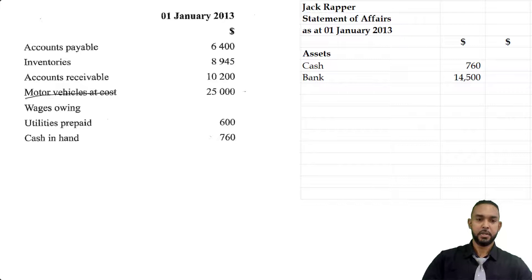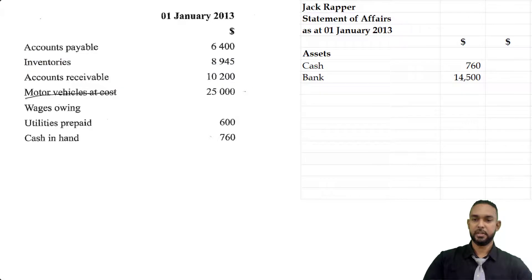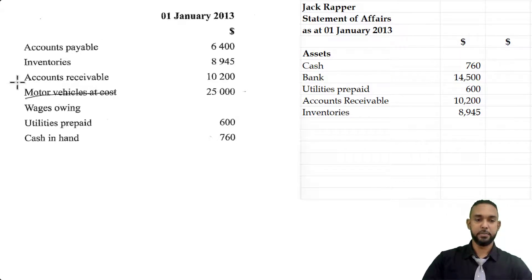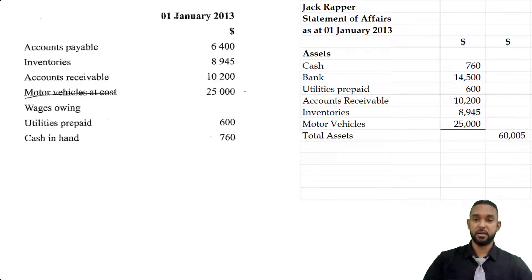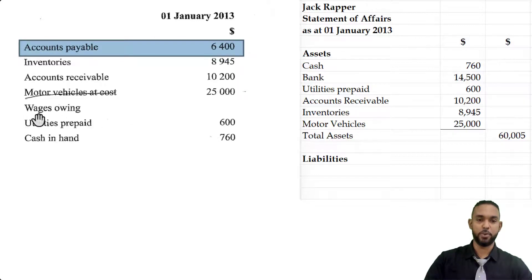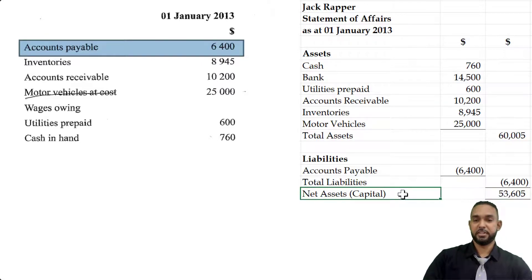Now I'll populate the statement of affairs. There's no particular order required — I went in order of liquidity, but you can also go in order of permanence as in a regular balance sheet. Starting with cash in hand of $760, then bank balance of $14,500, utilities prepaid, accounts receivable of $10,002, inventories, and motor vehicle as the only non-current asset. Total assets come to $60,005. The one liability is accounts payable of $6,400 — wages owing had no January 1st balance. Subtracting gives us capital of $53,605.